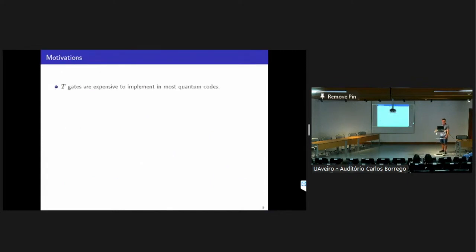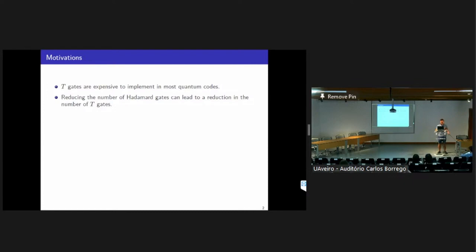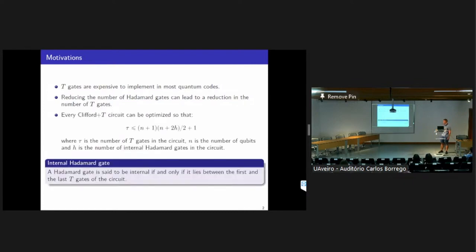If we have a Clifford plus T circuit, generally what we want to do is to optimize the number of T gates, because T gates are typically more expensive to implement than Clifford gates. However, it has been shown that reducing the number of Hadamard gates can help with the optimization of the number of T gates. The number of T gates in a Clifford plus T circuit can be upper bounded by (N+1)(N+2H)/2 + 1, where N is the number of qubits and H is the number of internal Hadamard gates.